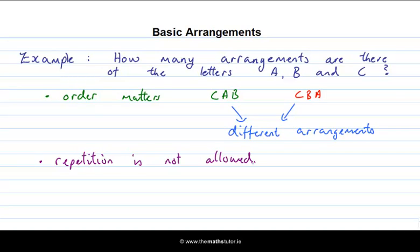So when we're talking about arrangements in this lesson, we're talking about arrangements of letters where repetition is not allowed. In this example we couldn't have an arrangement like A, A, B — that's not possible because we repeated the letter A. So we're asking how many arrangements of A, B, and C there are where the order matters and we can't repeat a letter. Let's see how to count this using the fundamental principle of counting.